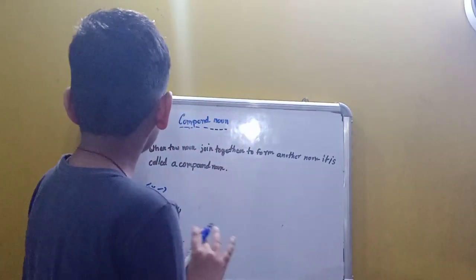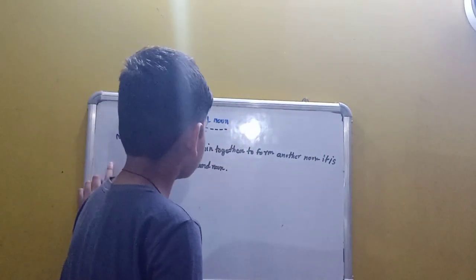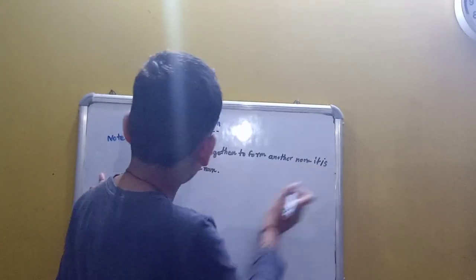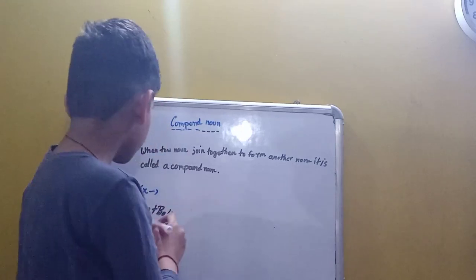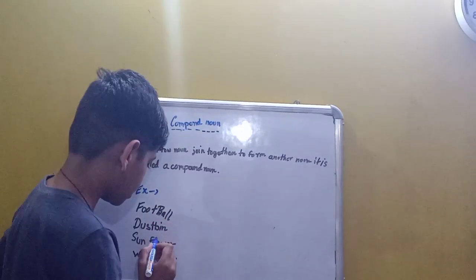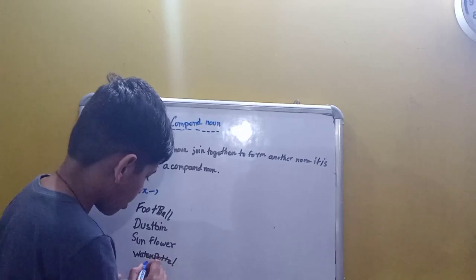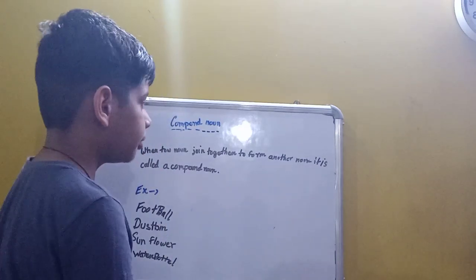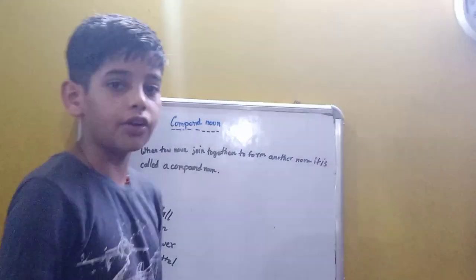Compound noun: when two nouns join together to form a new noun, it is called a compound noun. For example: football, dustbin, sunflower, water bottle. Please note this down in your notebook.